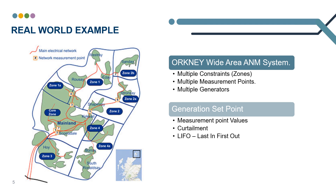The subsea cables are shown here as one and two on this diagram. The Orkney system has allowed over 20 additional generators to connect to the grid that otherwise would have had to wait on major reinforcements due to the worst case studies. All these generators join what we call a LIFO stack, which is essentially the order that the generators were connected to the system, with the last generator in being the first to be curtailed or tripped, depending on the measurement point values.